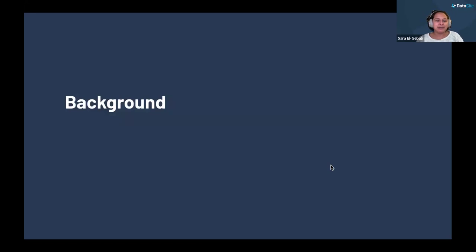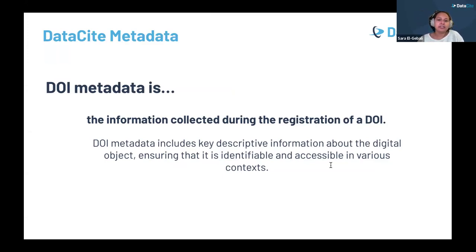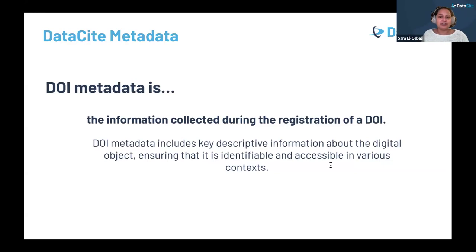Before we go into that, a little background: DOI metadata is the information collected when a DOI is registered. This metadata includes key details such as authors, title, and publication date — all necessary information organized according to the Datasite metadata schema. This provides a structured framework ensuring metadata is comprehensive, standardized, and consistent across different digital objects.